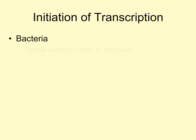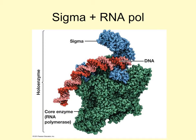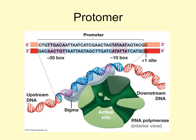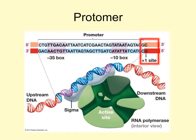In bacteria, a protein called the sigma subunit binds to a specific sequence at the beginning of a gene called the promoter. RNA polymerase then binds to the sigma subunit to create what is called the holoenzyme. The promoter has specific nucleotide sequences — these are not part of the code, but are a signal that sigma recognizes and binds to. The promoter is found upstream of the coding portion of the gene, and the plus-1 site is where transcription will begin, with coding sequences continuing downstream.